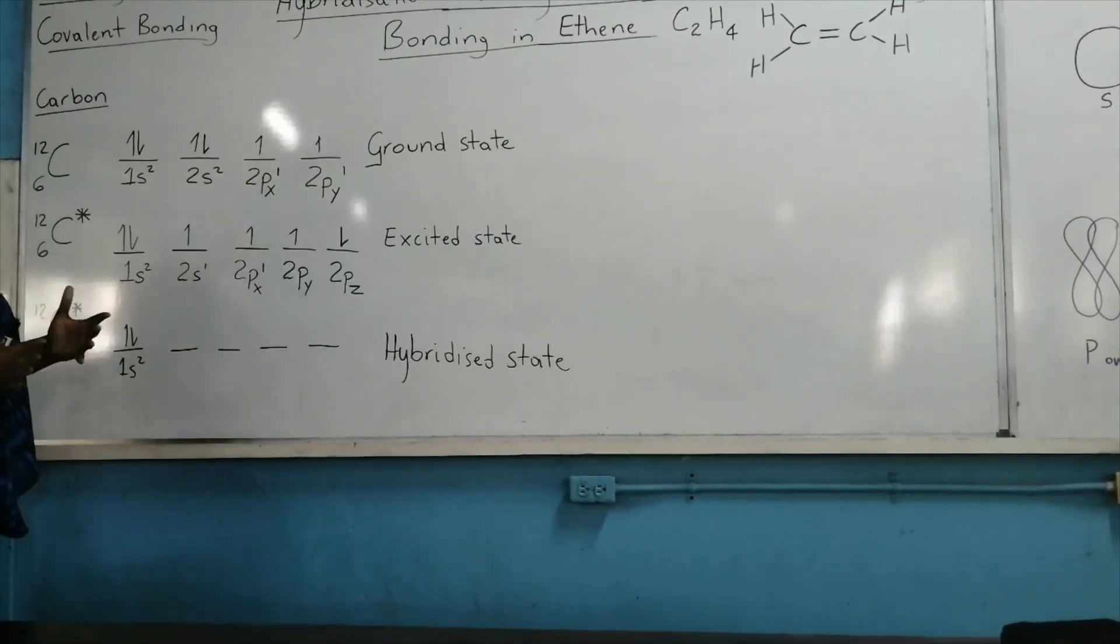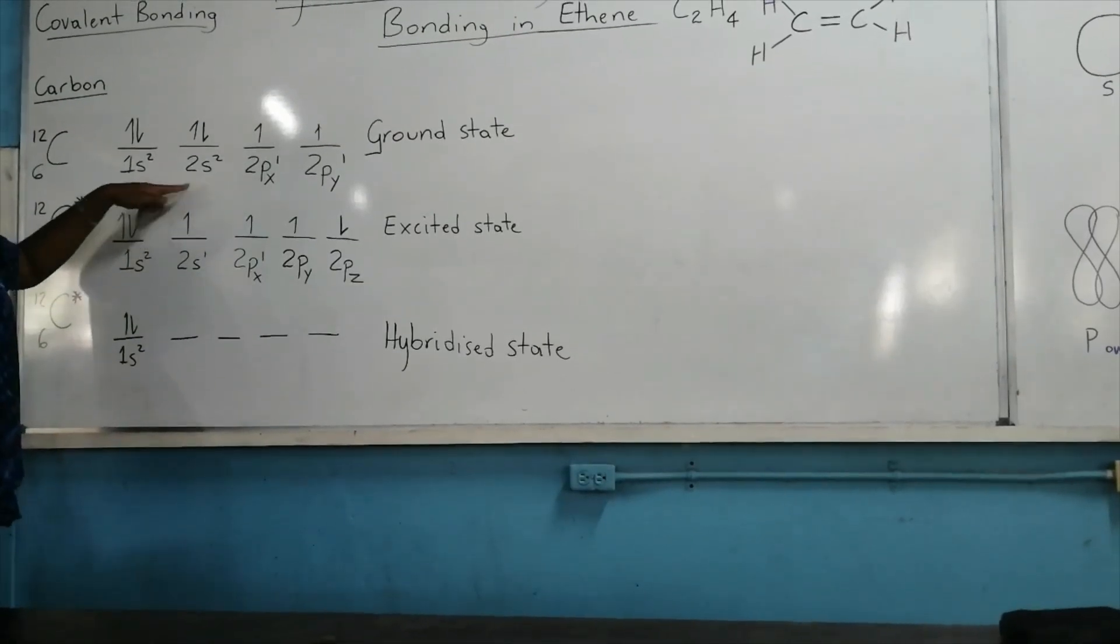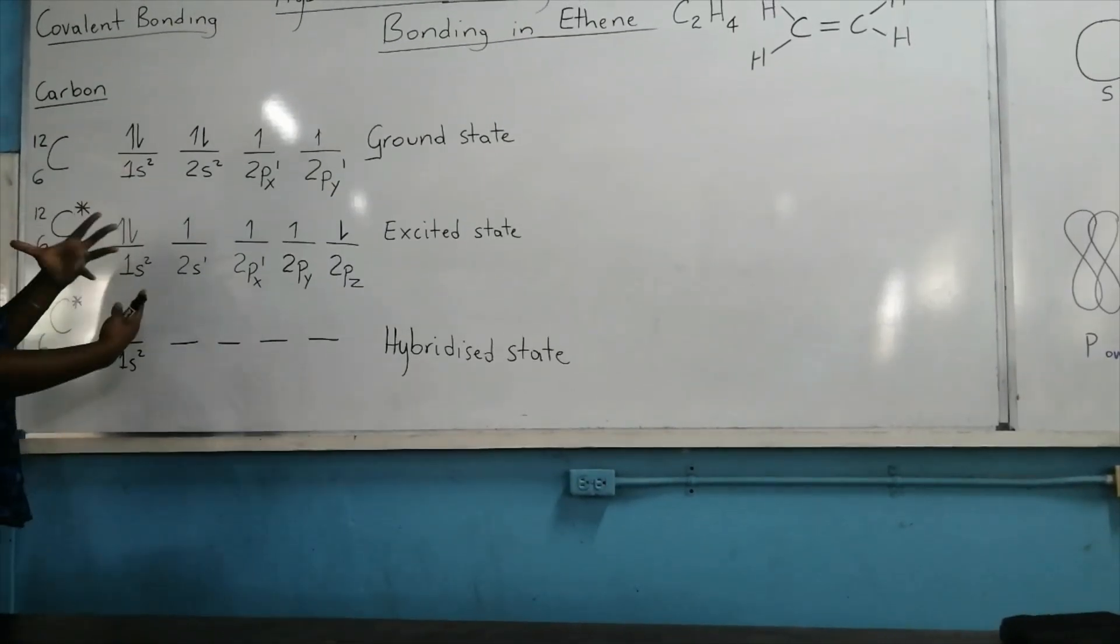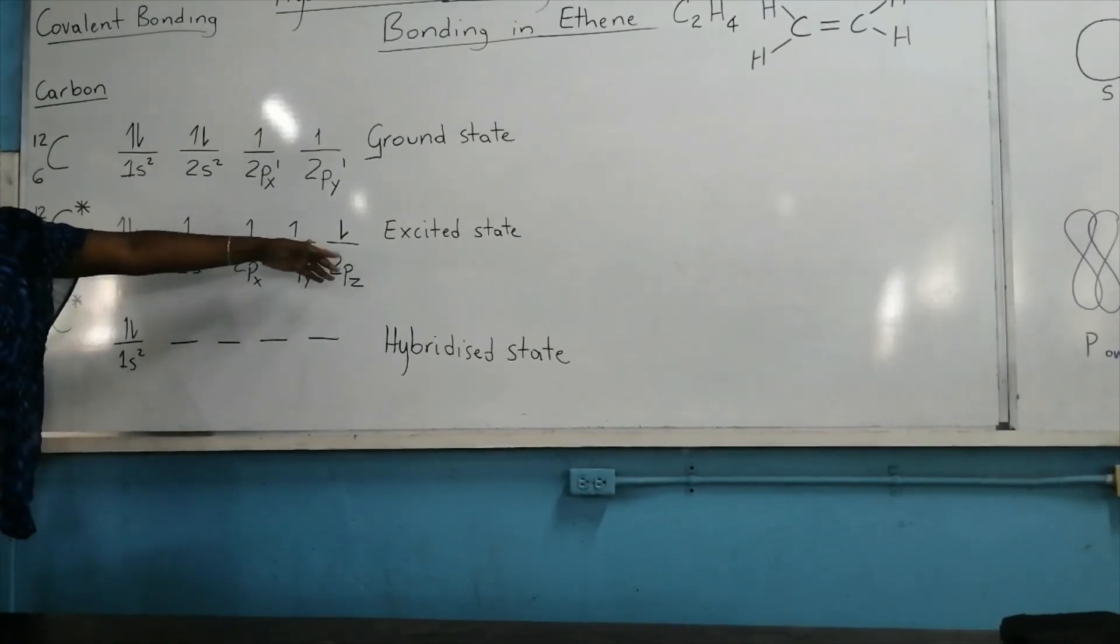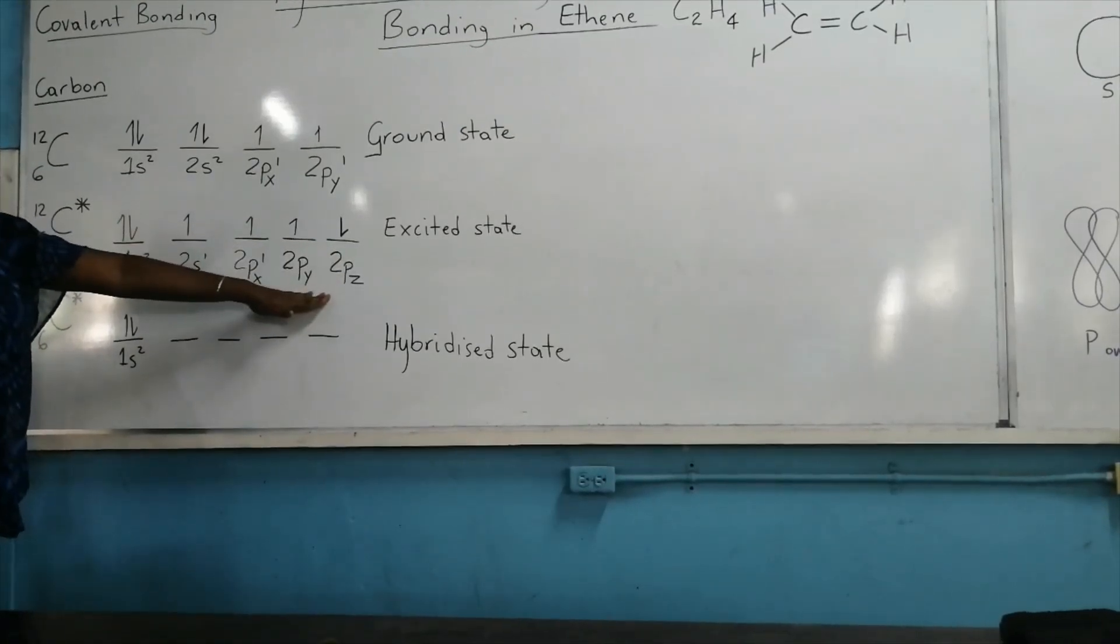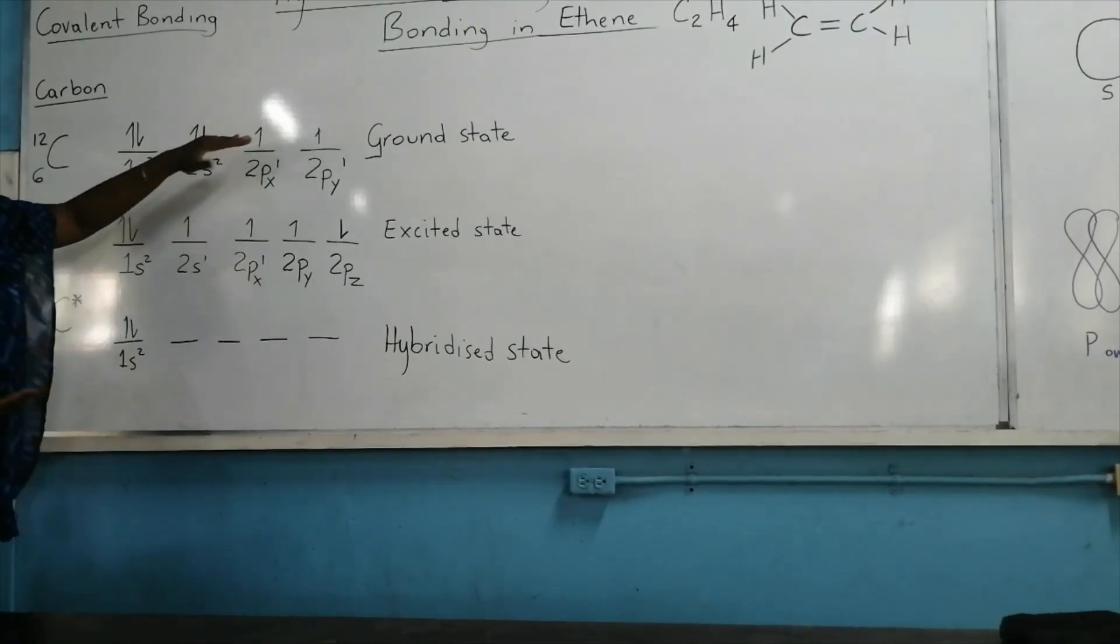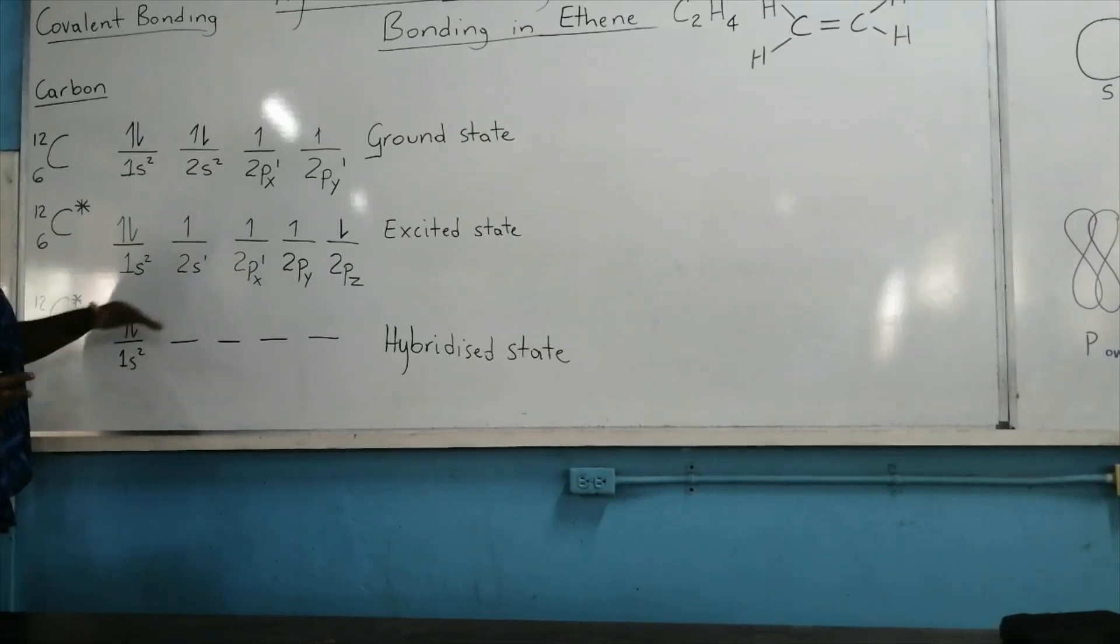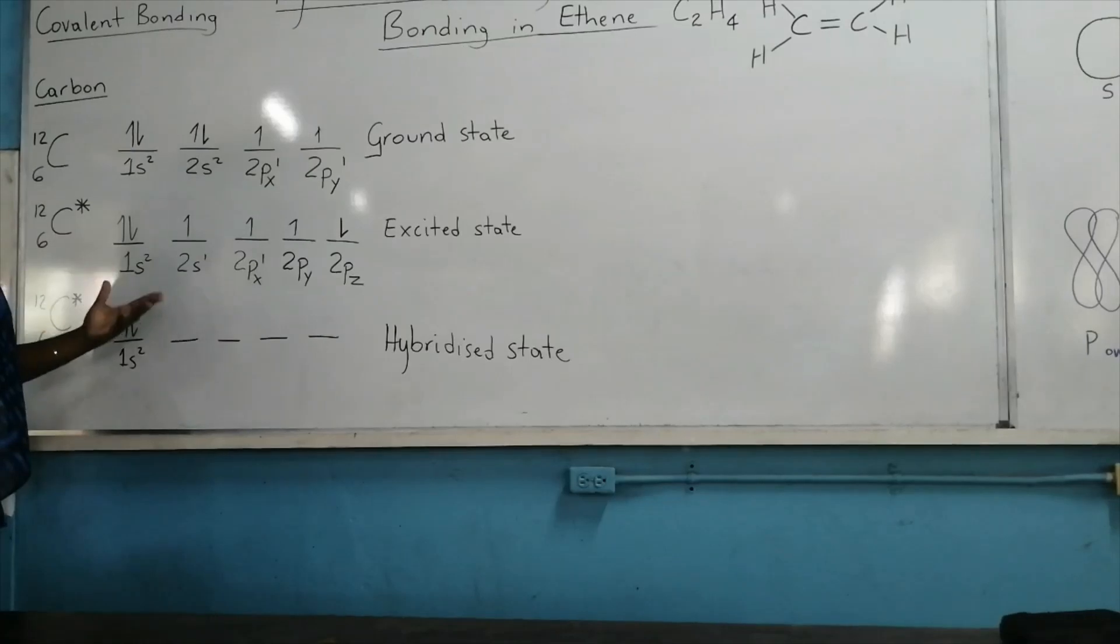When carbon becomes excited by absorbing energy, one of the 2s electrons now becomes excited and it leaves this atomic orbital and goes to reside in the vacant 2p orbital. So now we move from carbon in the divalent state, with two unpaired electrons, to carbon now being in the tetravalent state. So we have four unpaired electrons to form four covalent bonds.